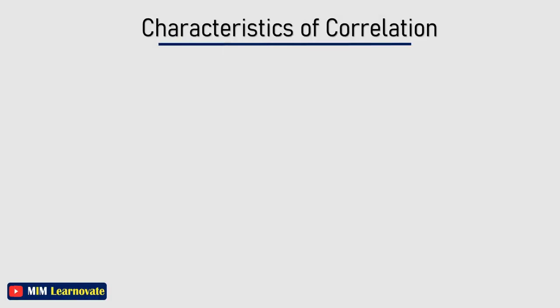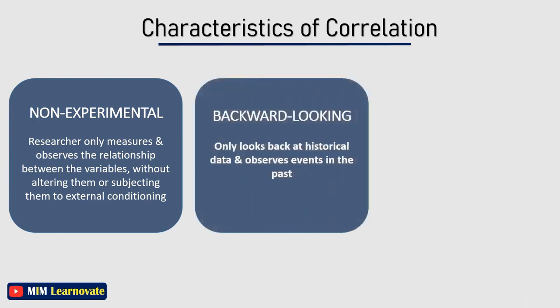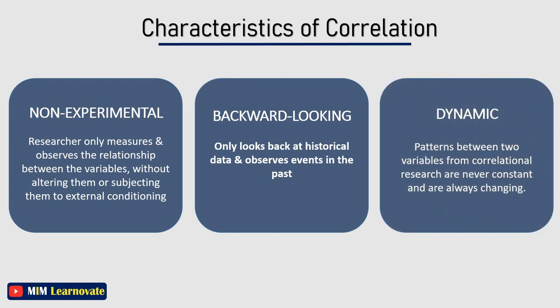Correlational Research has three main characteristics. First, it is Non-Experimental — the researcher only measures and observes the relationship between variables without altering them or subjecting them to external conditioning. Second, it is Backward Looking — it only looks back at historical data and observes events in the past. Third, it is Dynamic — the patterns between two variables are never constant and are always changing.